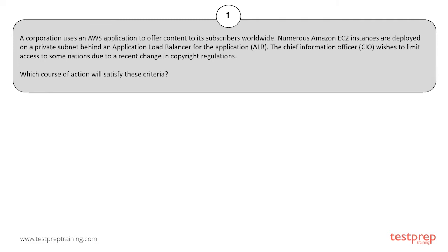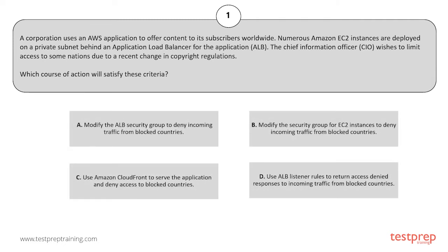Your options are: A. Modify the ALB security group to deny incoming traffic from blocked countries. B. Modify the security group for EC2 instances to deny incoming traffic from blocked countries. C. Use Amazon CloudFront to serve the application and deny access to blocked countries. D. Use ALB listener rules to return access denied responses to incoming traffic from blocked countries.